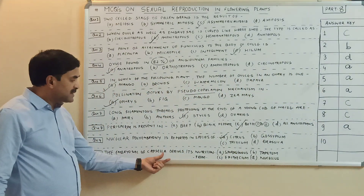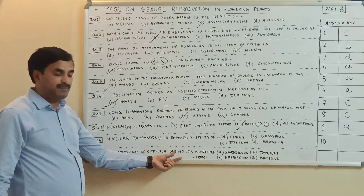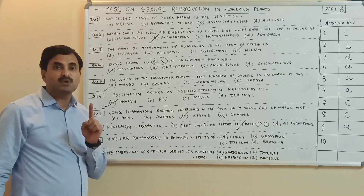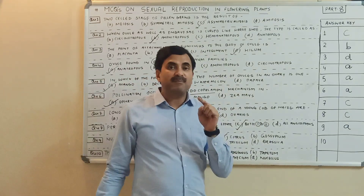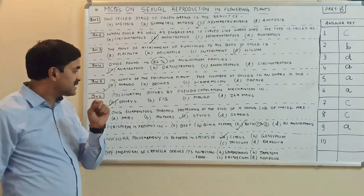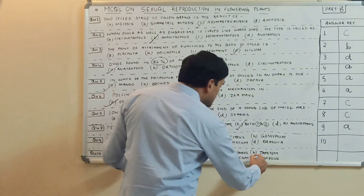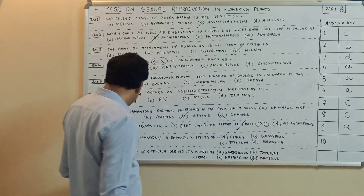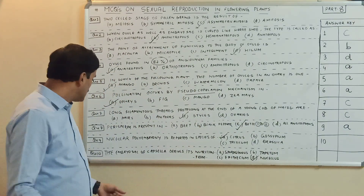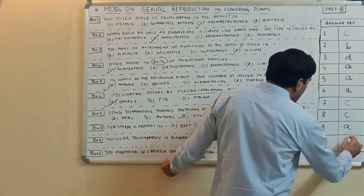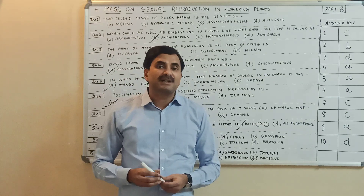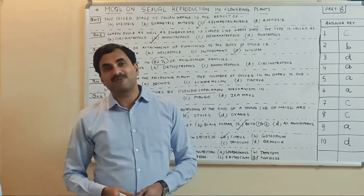The embryo sac of Capsella derives its nutrition from? The embryo sac is embedded in the nucellus, and the nucellus is the nutritive tissue. So the answer must be nucellus — the embryo sac of Capsella derives its nutrition from the nucellus. Question number ten has the answer D. All these questions are very important for exam purposes. Thanks a lot for watching.